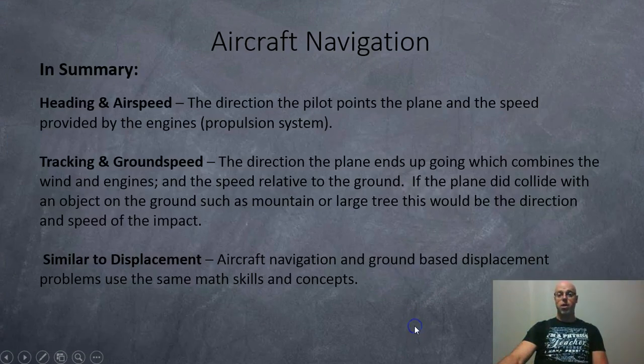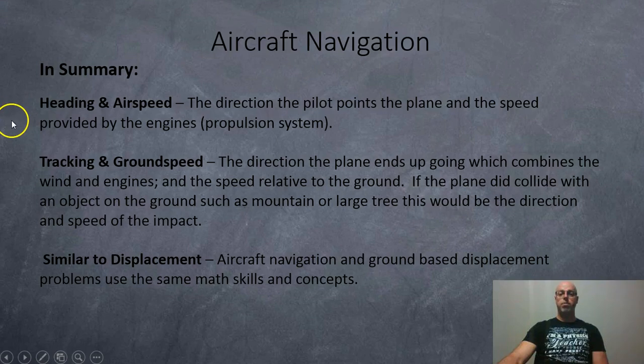And that's it. So in summary, heading and airspeed. Heading is the direction the pilot points the plane, and airspeed is provided by the engines, your propulsion system. Tracking is the direction your plane is traveling according to a radar station. So how is it actually moving compared to the ground? And ground speed is your overall speed, the engines plus the wind combined. And you may notice this is very similar to solving displacement questions. So if you can solve displacement questions, same math to solve aircraft navigation questions. So I hope this has been useful and good luck with your questions. Thank you.